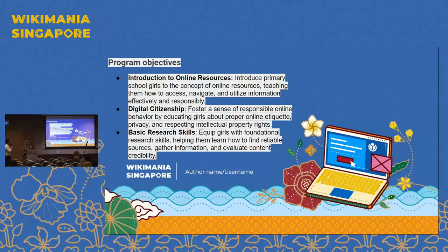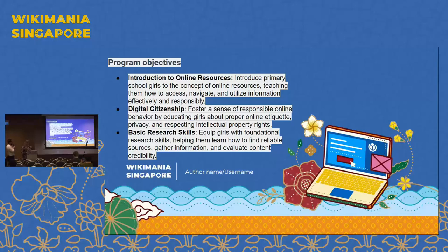The objectives of our program are to provide an introduction to online resources, to introduce primary school girls to how to access and navigate information, and how to edit Wikipedia. We also give them basic research skills because in Wikipedia we cite every sentence or paragraph with a source. So we teach them how to gather information, find reliable sources, and increase the credibility of articles.